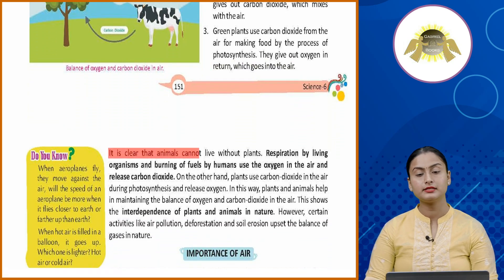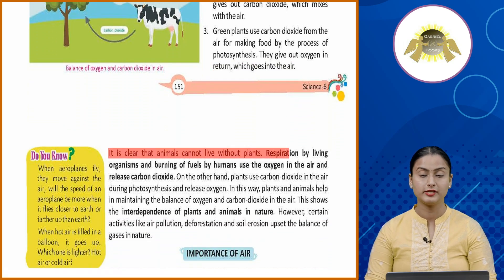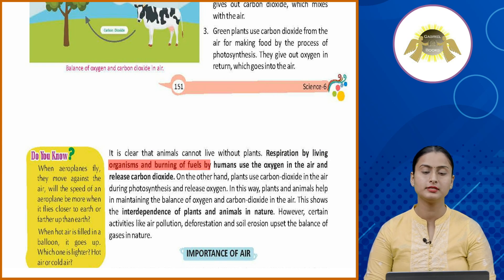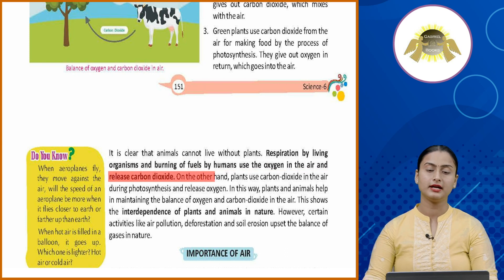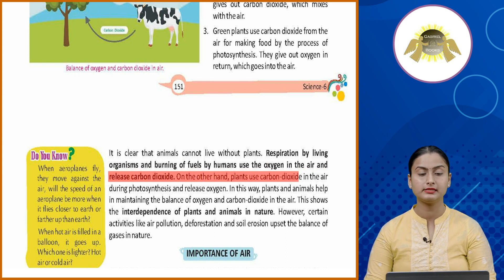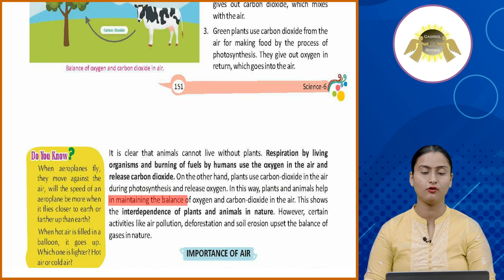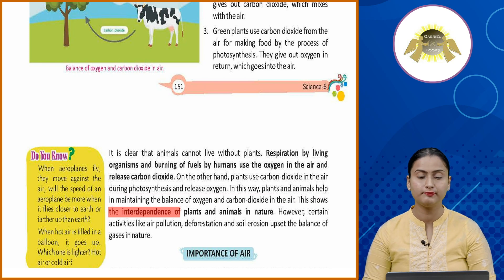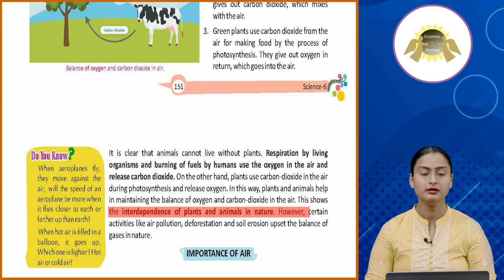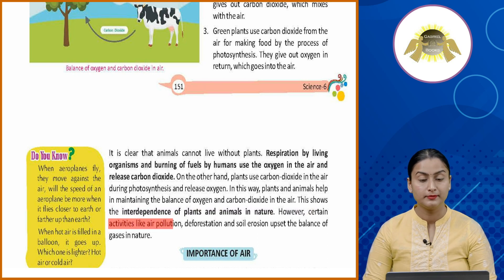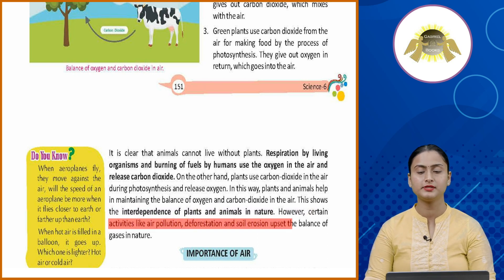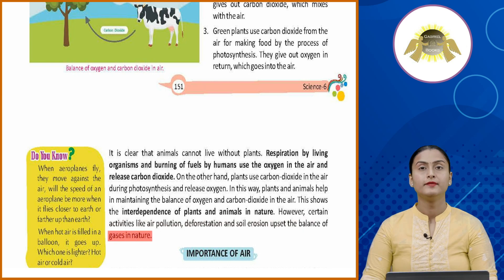It is clear that animals cannot live without plants. Respiration by living organisms and burning of fuels use oxygen and release carbon dioxide. On the other hand, plants use carbon dioxide during photosynthesis and release oxygen. In this way, plants and animals help maintain the balance of oxygen and carbon dioxide in the air, showing their interdependence in nature. However, air pollution, deforestation, and soil erosion upset this balance.